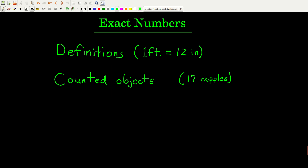There are also what we call exact numbers. One way to think about them is as numbers with an infinite number of significant figures — more than anything else. Exact numbers come up in two situations: first, if something is a definition, such as one foot being exactly 12 inches — both the one and the 12 are exact. Second, when counting discrete objects: 17 apples is exactly 17, so there's an infinite number of significant figures there too.